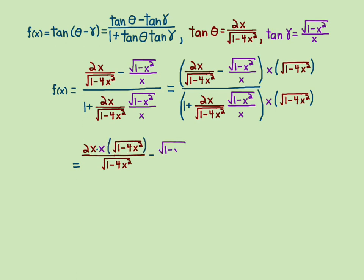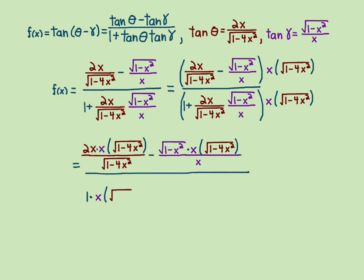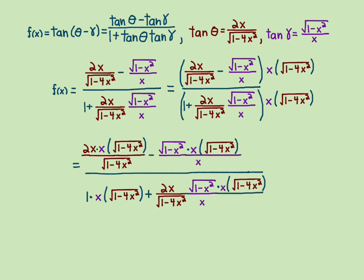You get the first term on top and the second term on top, and then the first and second terms on the bottom. Things cancel: the x's cancel in the first term on top, the square root of 1 minus 4x squared cancels in the second; on the denominator, the x's cancel on the first term, nothing cancels in the second — it's just x times the square root of 1 minus 4x squared.